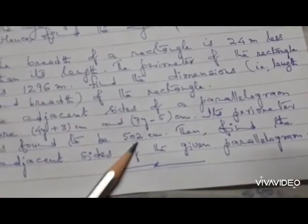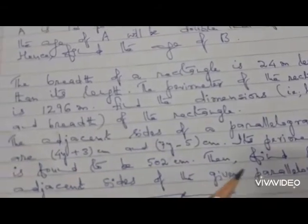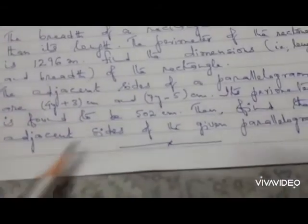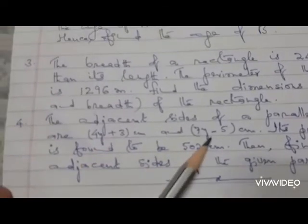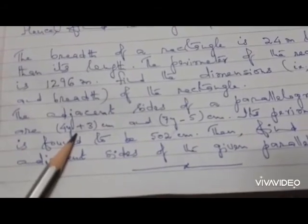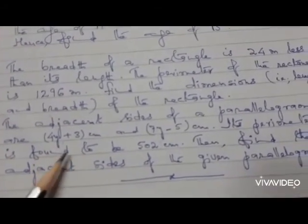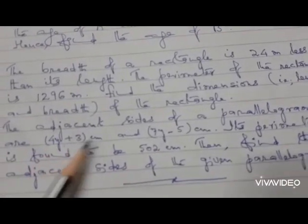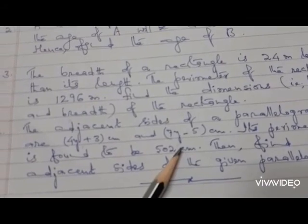We will get 502 cm. This is an algebraic equation, and then you have to find the adjacent sides. After you find y, you come to the adjacent sides. Therefore, if y is replaced, you will get the two sides. That is all.